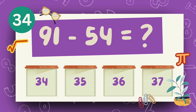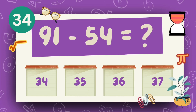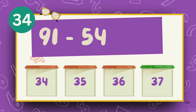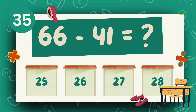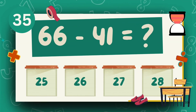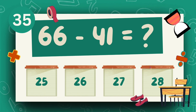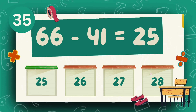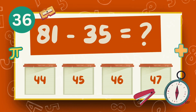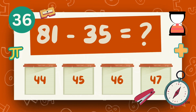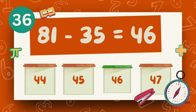What is 91 minus 54? The answer is 37. What is 66 minus 41? The answer is 25. What is 81 minus 35? The answer is 46.